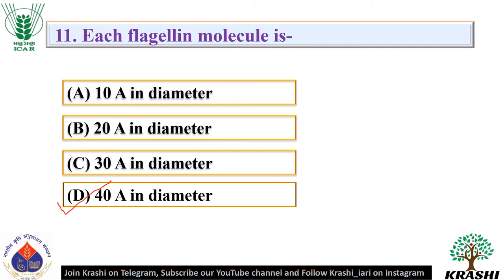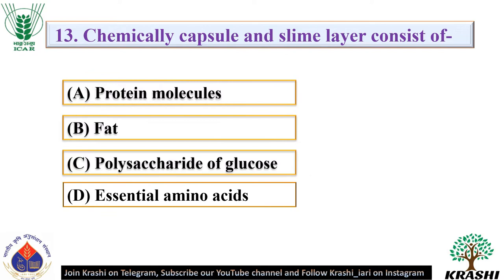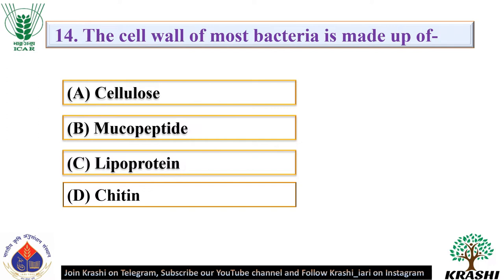The basal body of bacterial flagella is anchored in the. The correct answer is option A — plasma membrane. Question number 13: Chemically, capsule and slime layer consist of — they consist of polysaccharide of glucose. Question number 14: The cell wall of most bacteria is made up of. The correct answer is option B — mucopeptide.